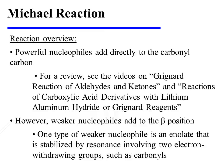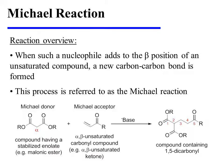However, weaker nucleophiles add to the beta position. One type of nucleophile is an enolate that is stabilized by resonance involving two electron-withdrawing groups, such as carbonyls. When such a nucleophile adds to the beta position of an unsaturated compound, a new carbon-carbon bond is formed, and this process is referred to as the Michael reaction.